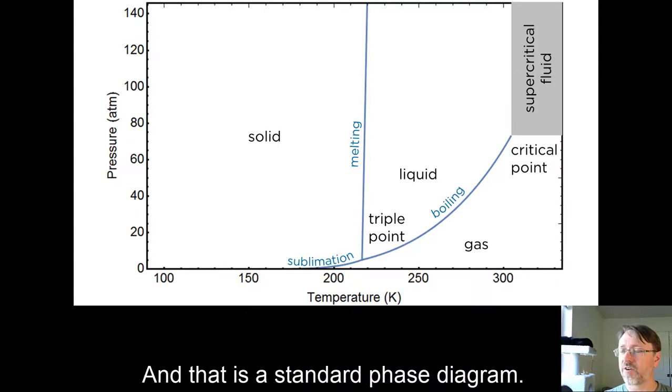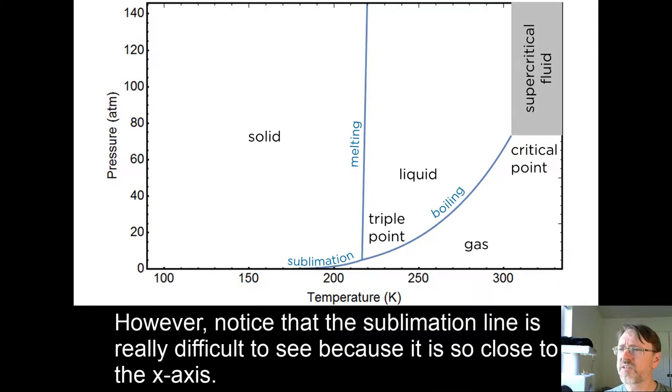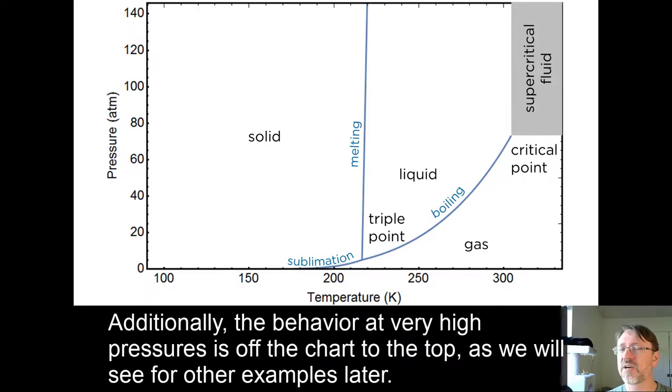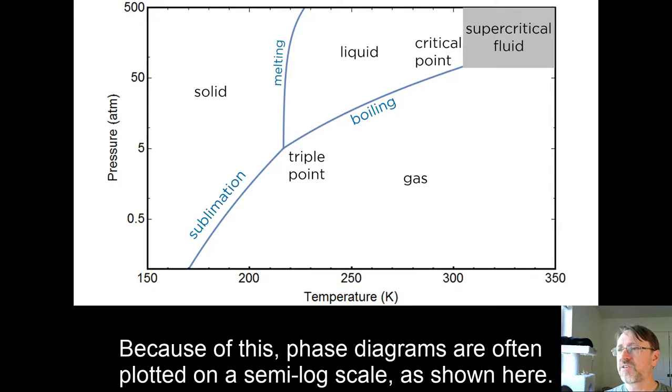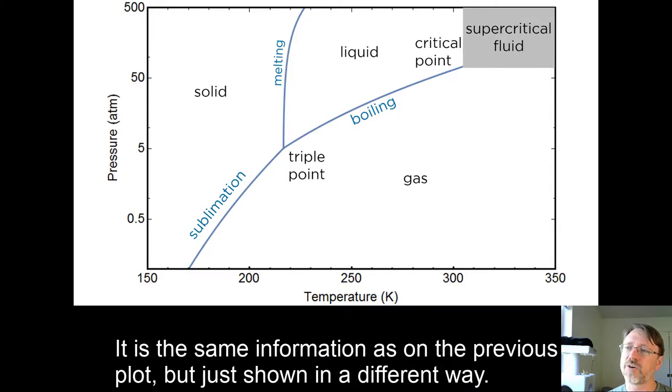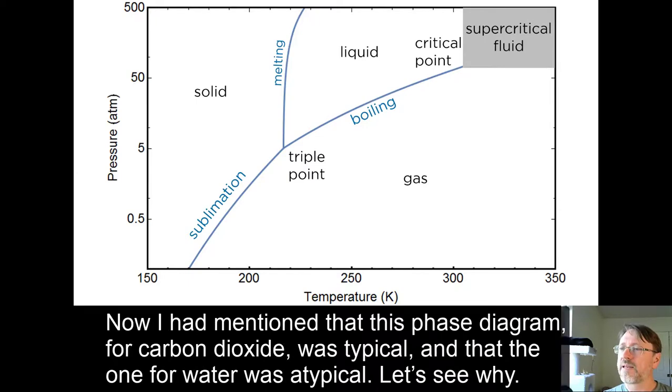And that is a standard phase diagram. However, notice that the sublimation line is really difficult to see because it is so close to the x-axis. Additionally, the behavior at very high pressures is off the chart to the top, as we will see for other examples later. Because of this, phase diagrams are often plotted on a semi-log scale, as shown here. It is the same information as the previous plot, but just shown in a different way.